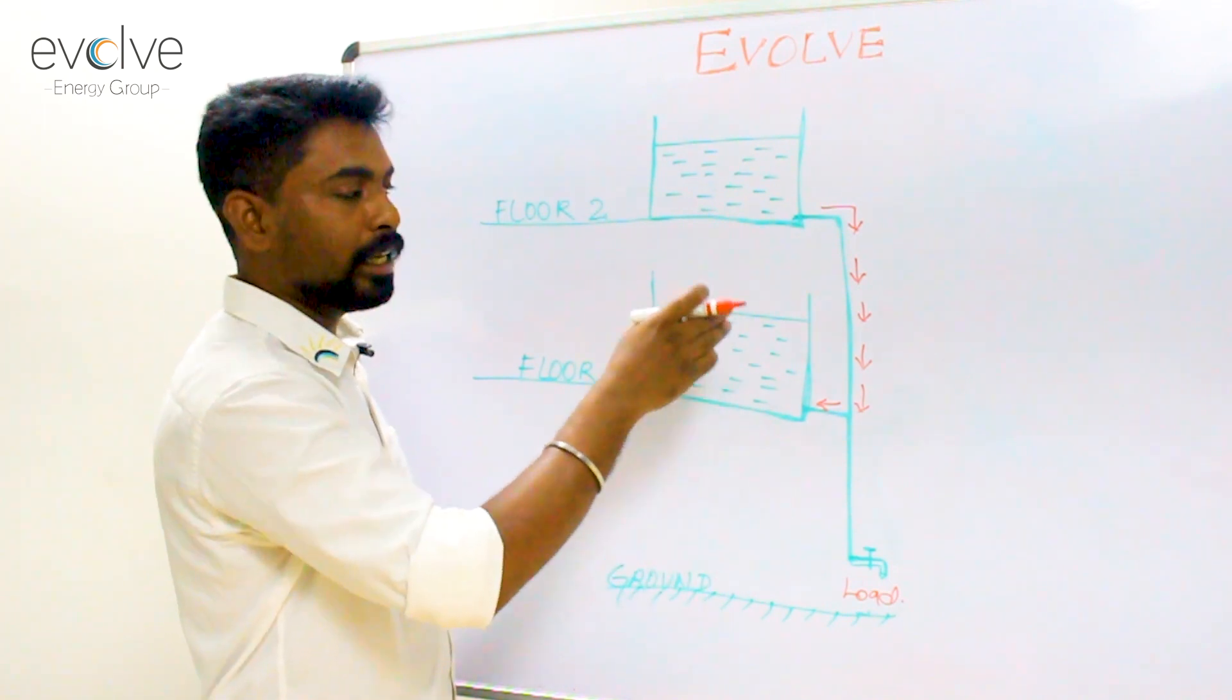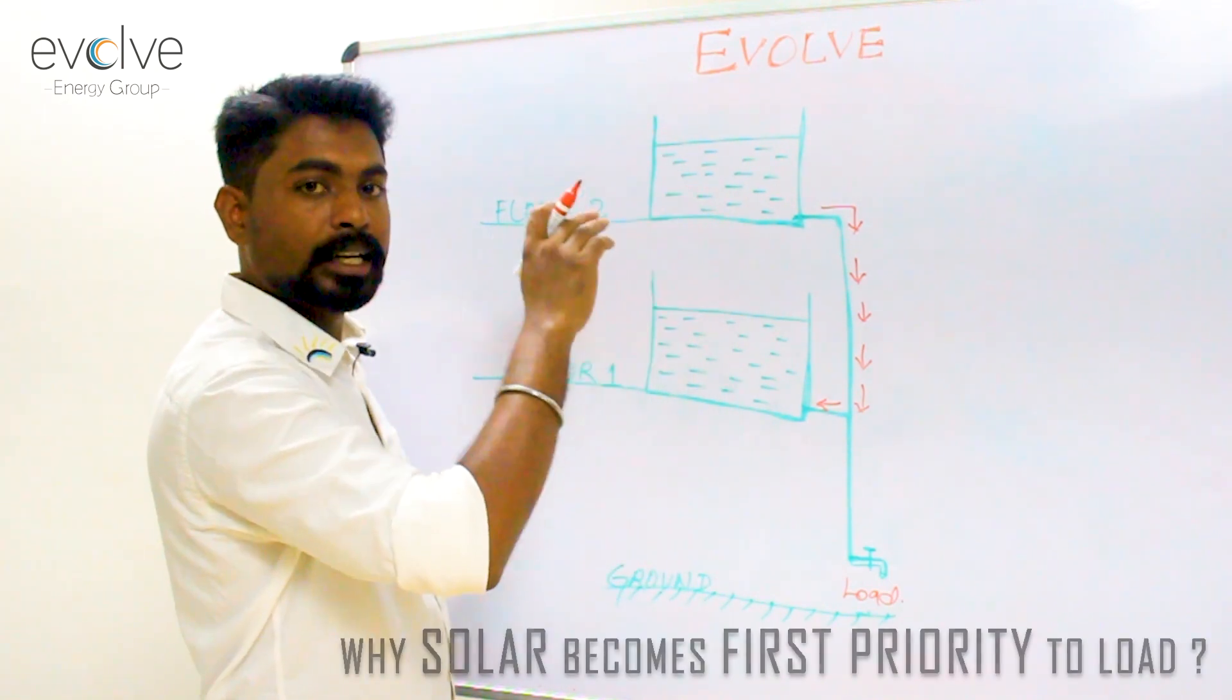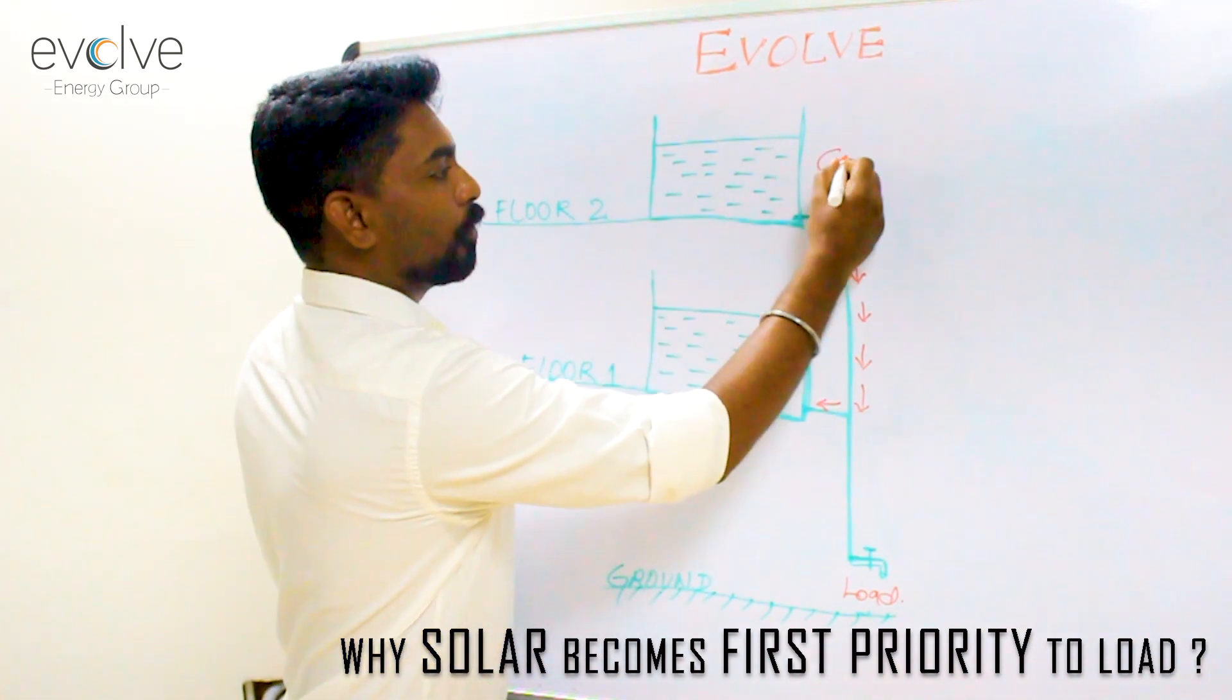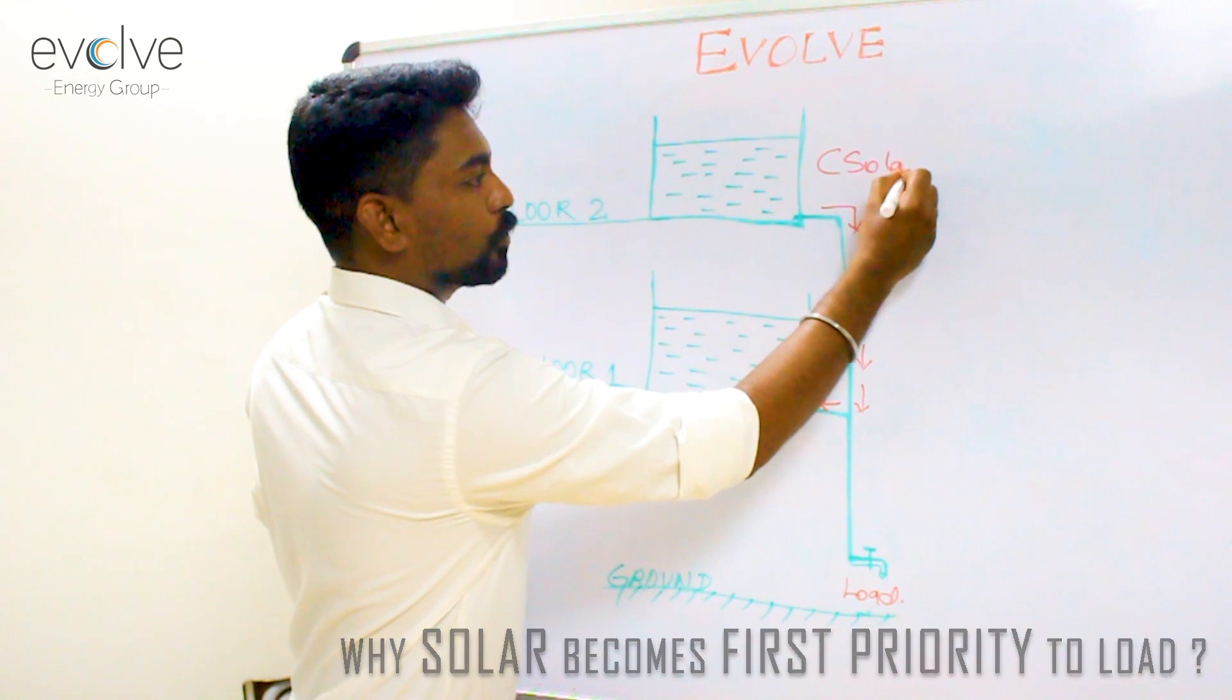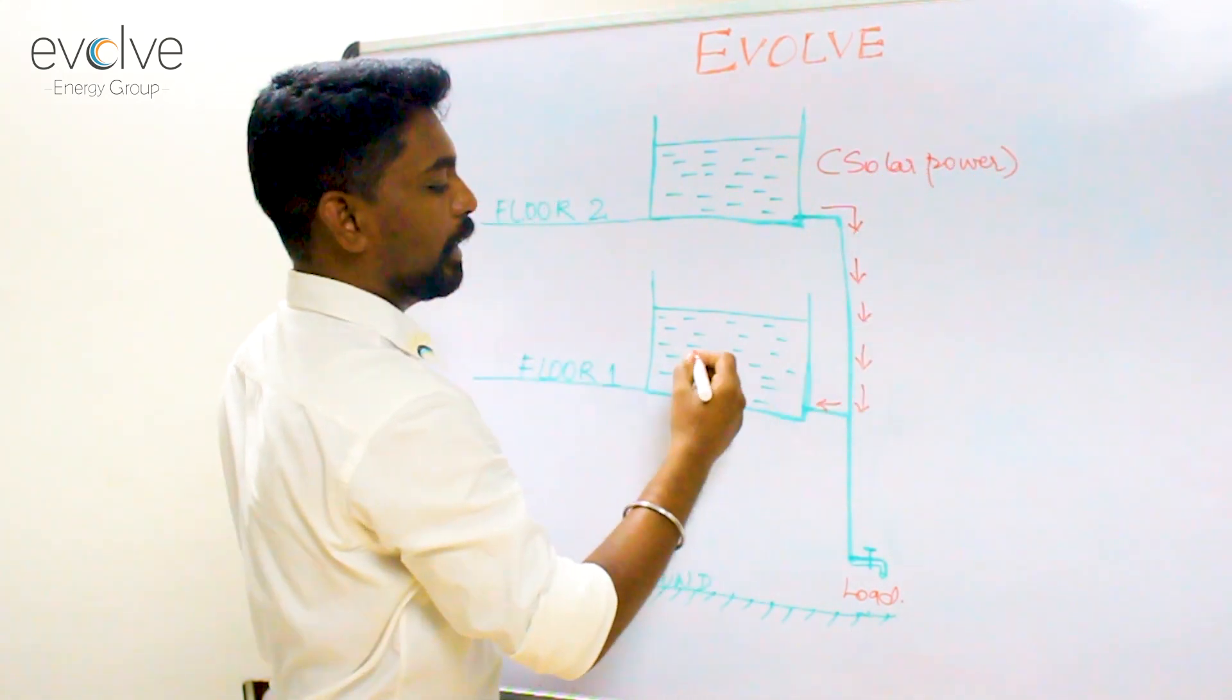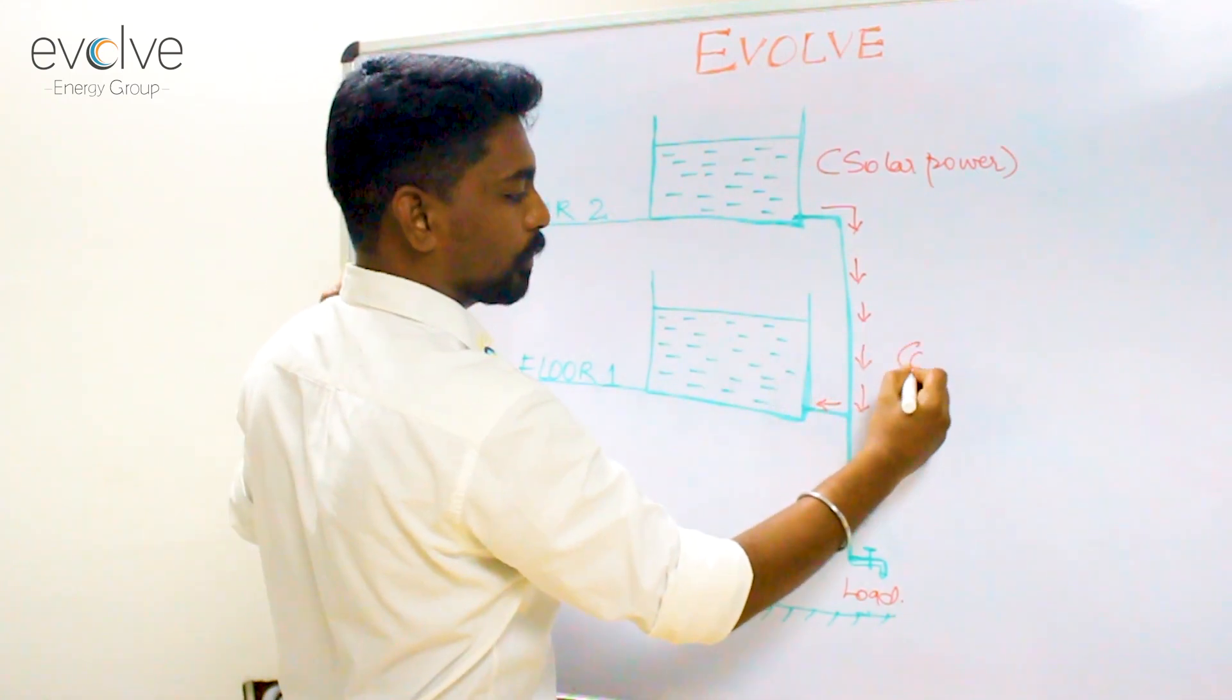Whenever there is a need, energy from the higher potential tends to flow into the lower potential. So, the tank on floor 2 is your solar power and the tank on floor 1 is your grid.